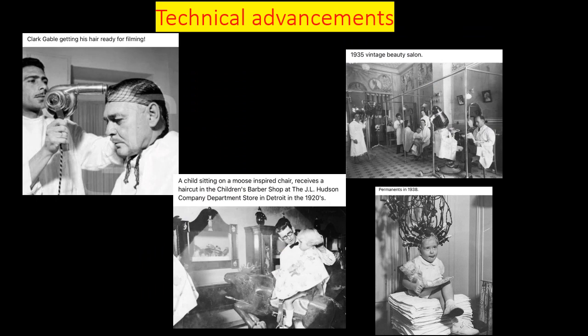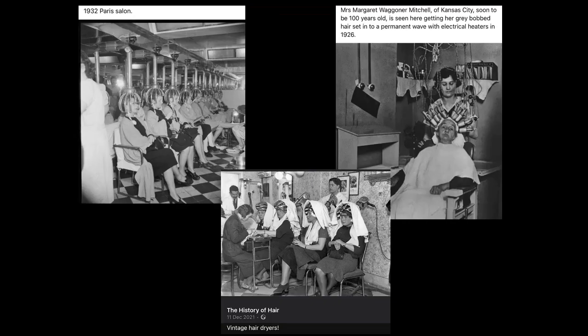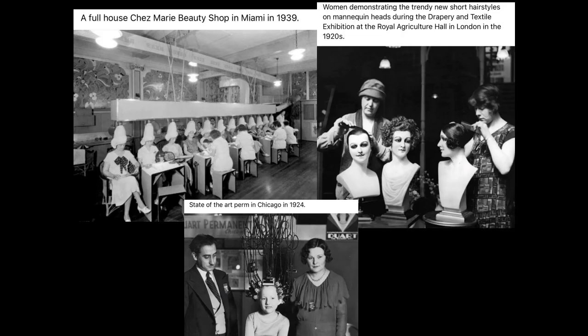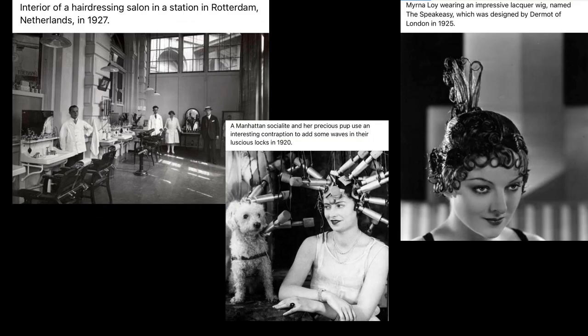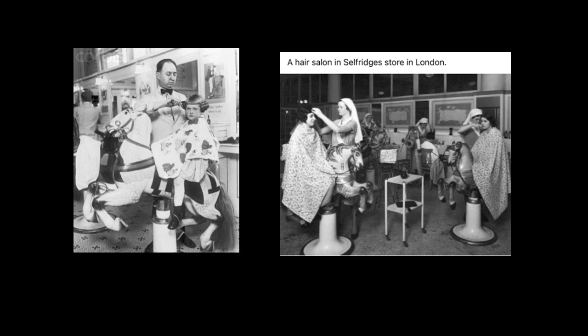Here we've got technical advancements with some images of the 1920s and some of the 1930s, so you need to be careful about what you're using — they're not all from the 1920s. Make sure you read what you're doing. Also shown is how they used to do perms, and how children used to have their hair cut on rocking horses — how cool was that?